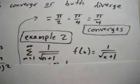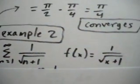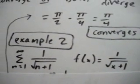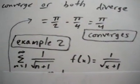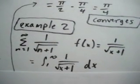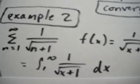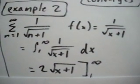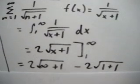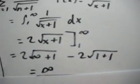Let's try it again in example 2. We have the series from 1 to infinity of 1 over the square root of n plus 1. Our f(x) is going to be 1 over square root of x plus 1. Since we know that it's positive, continuous, and decreasing — it satisfies all the conditions — when we plug it into the integral, we get the integral from 1 to infinity of 1 over the square root of x plus 1 dx. We do the integral and get 2 times the square root of x plus 1 evaluated from 1 to infinity. When we plug in those bounds, we get 2 times the square root of infinity minus 2 times the square root of 2, which equals infinity. When you get infinity as an answer, you know that it diverges.